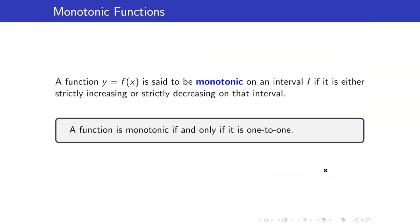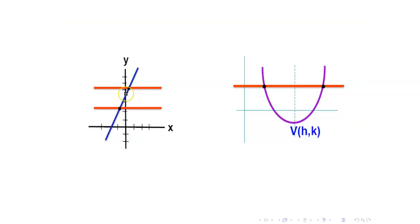Let us recall monotonic functions. A function is said to be monotonic if it is either strictly increasing or strictly decreasing on that interval. The nice thing about monotonic functions is that a function is monotonic if and only if it is one-to-one. This gives us a characterization of all one-to-one functions. So for example, if I have a line — this line is increasing everywhere — so therefore it is monotonic, and hence if you use the horizontal line test, it is one-to-one.